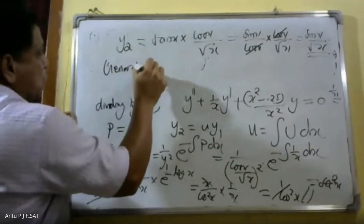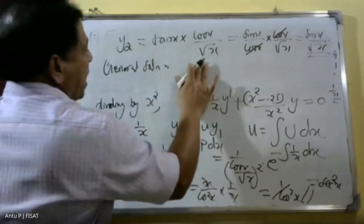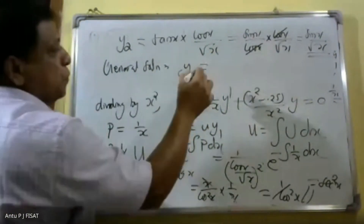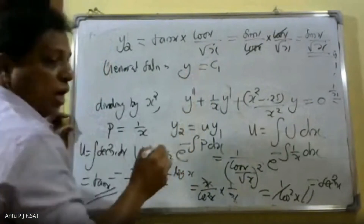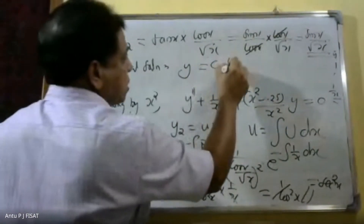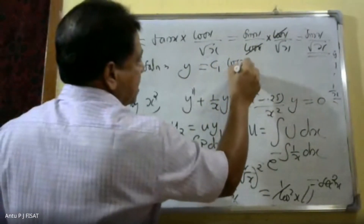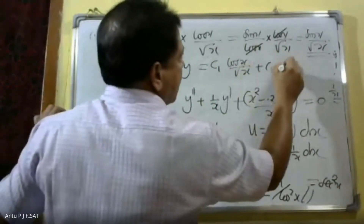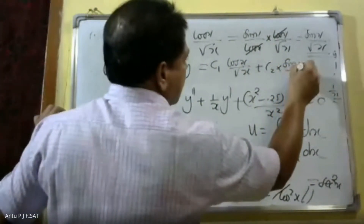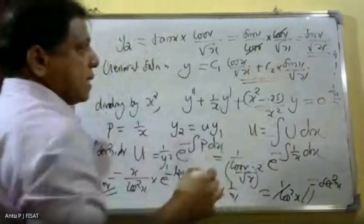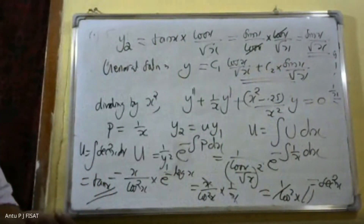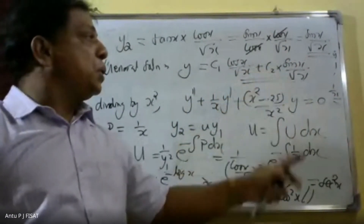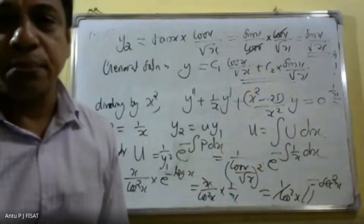The general solution is y = c₁y₁ + c₂y₂. Therefore, y = c₁·cos(x)/√x + c₂·sin(x)/√x.